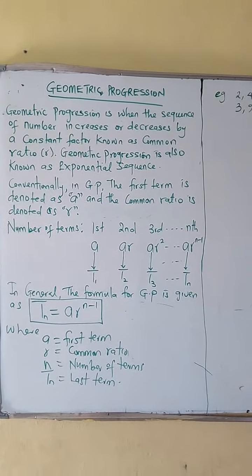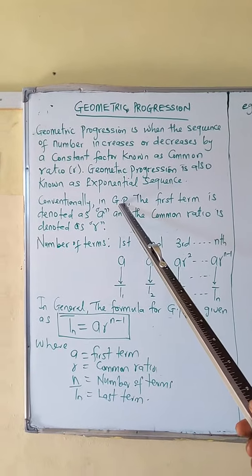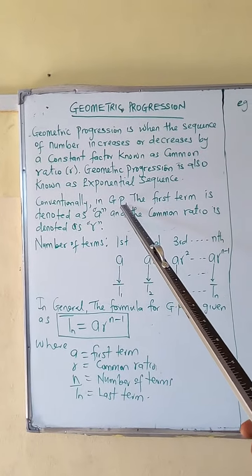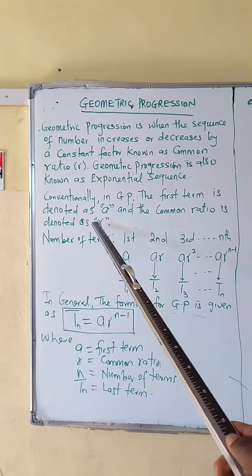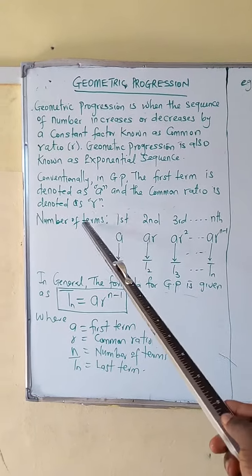Conventionally, geometric progression can be represented as GP. In GP, the first term is denoted as A, and the common ratio is denoted as R.